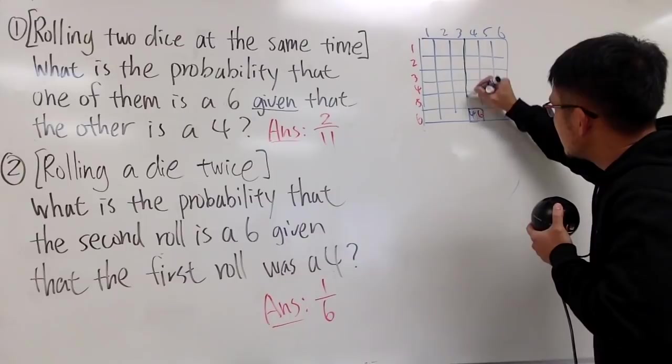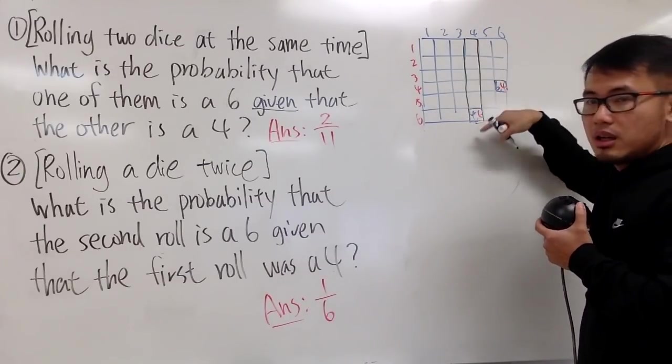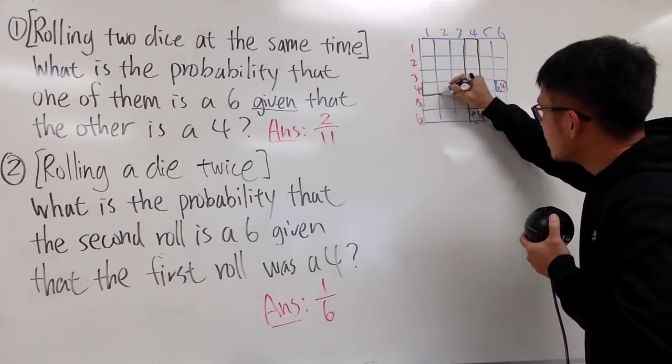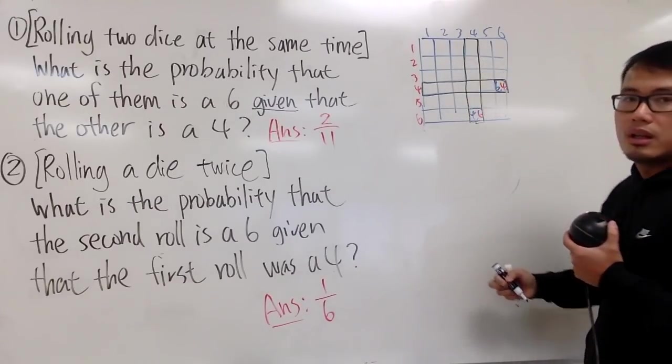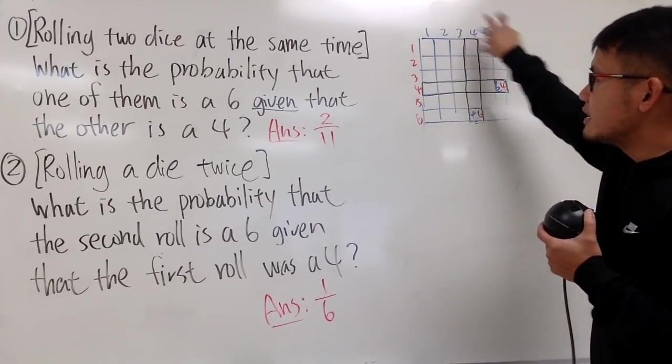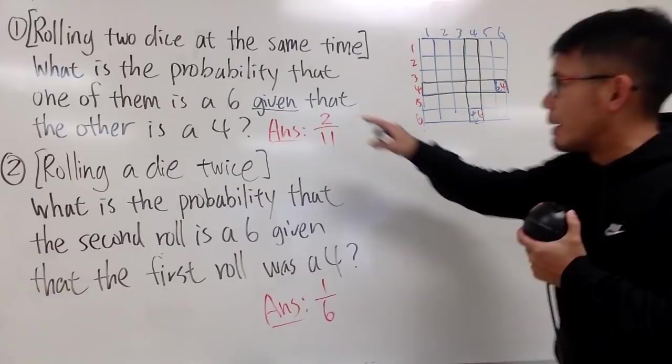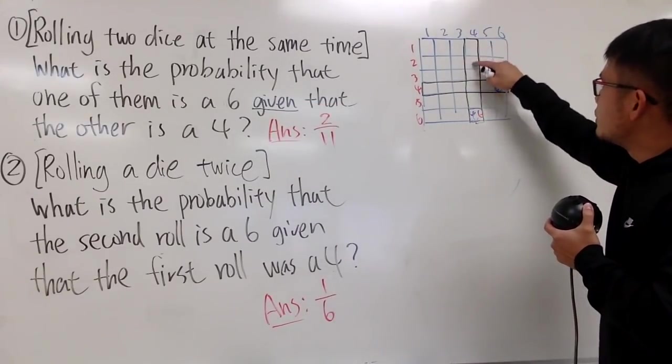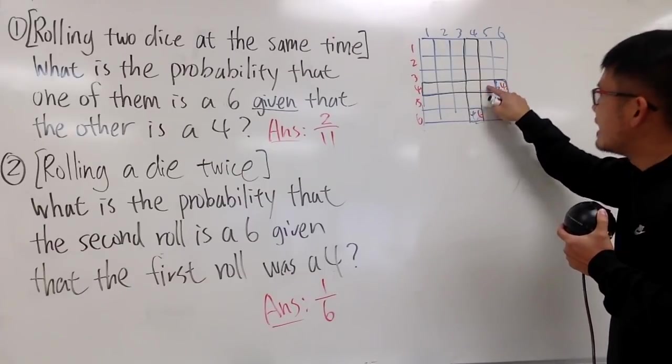to this right here, because you want one of them to be a 4, or this right here, because maybe the red one is a 4. So, instead of 36 possible outcomes, if you didn't know any given information, but once we do, you have 1, 2, 3, 4, 5, 6, 7, 8, 9, 10, 11.